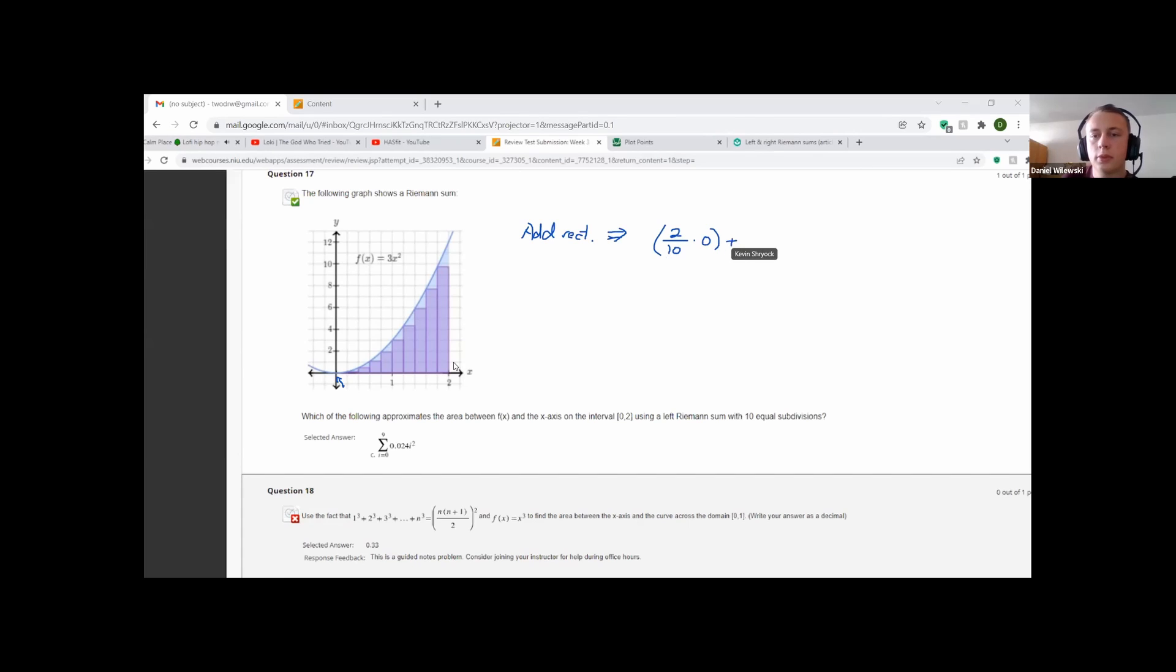Yep. All right, next one. Width of 2 over 10, height of 1, up to the function, 3x squared. Yeah, times 3. Yep.